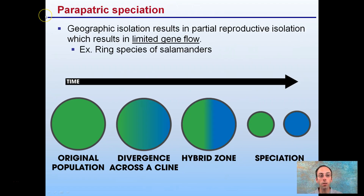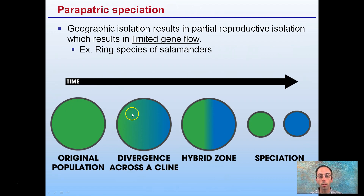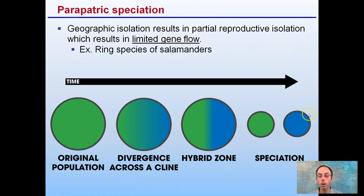We have parapatric speciation, which is a result of geographic isolation resulting in partial reproductive isolation, which results in limited gene flow. We see the original population in a different cross combination. We see a gradient almost developing, with a favoritism here for the blue genes and here for the green, and we have this limited gene flow resulting in our two different species — the blue and the green.